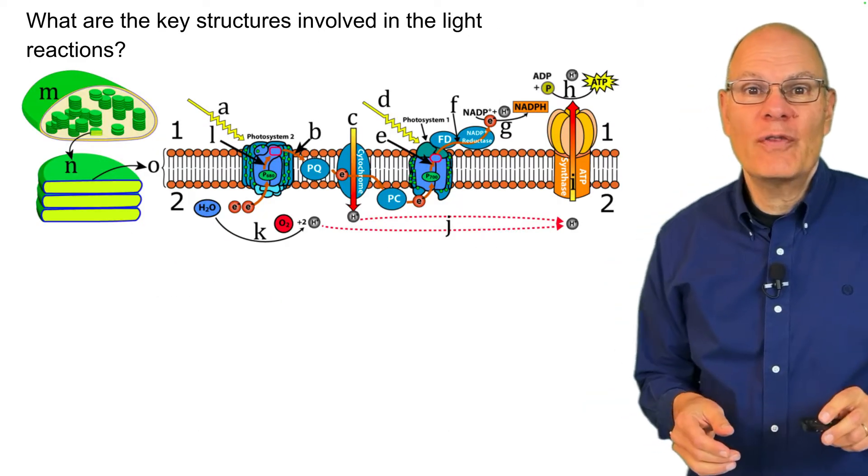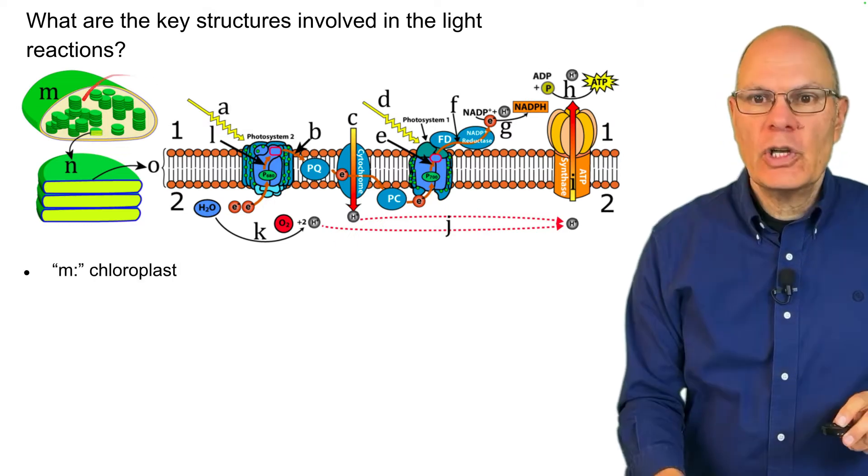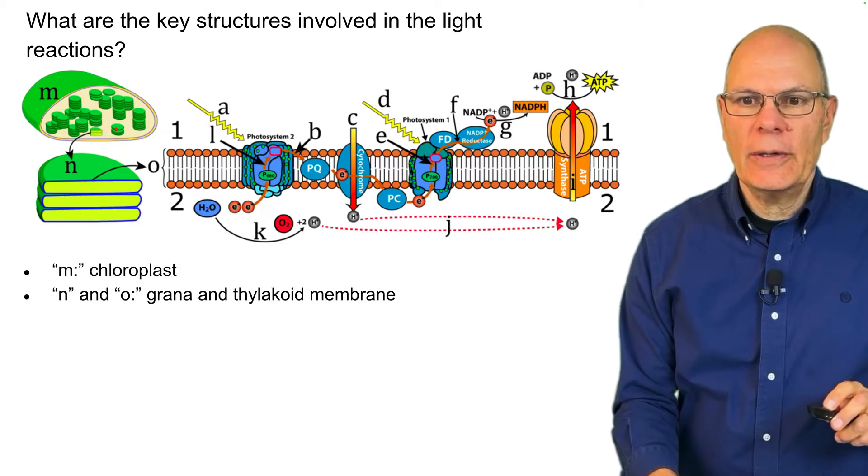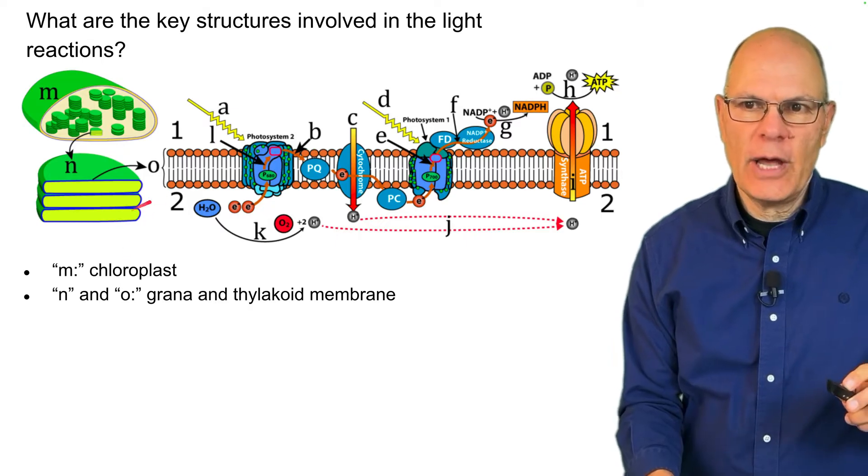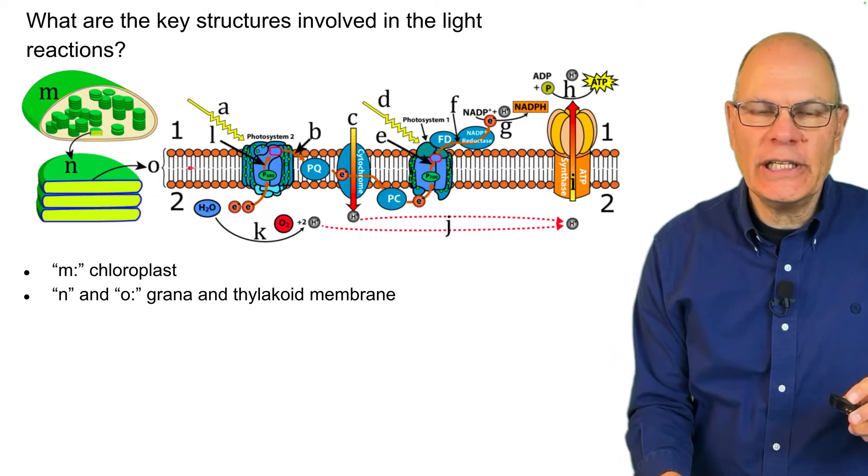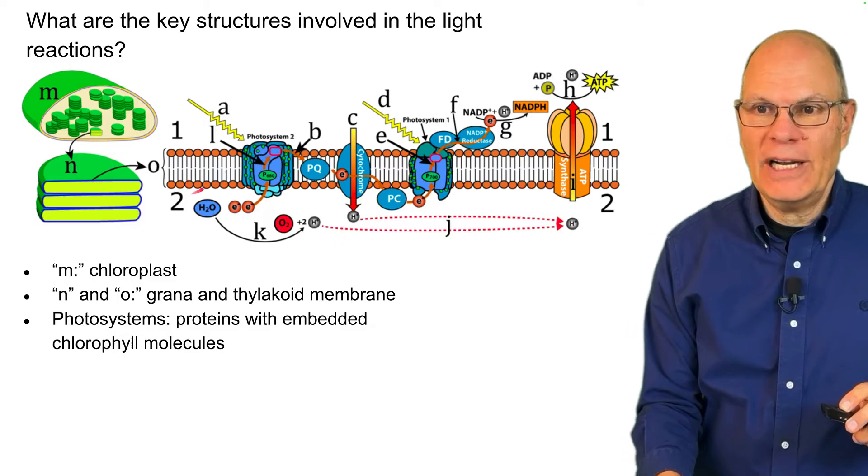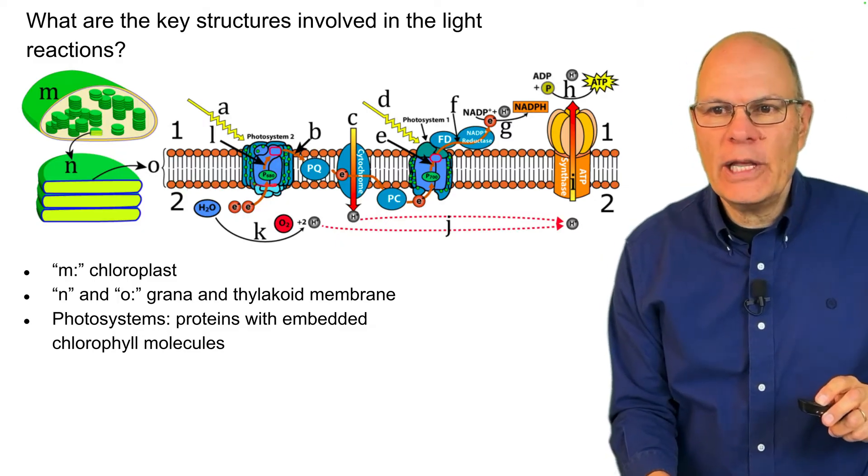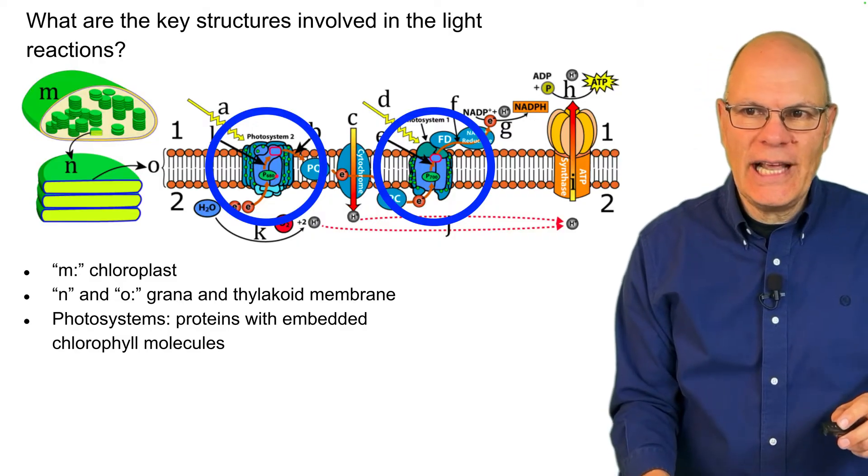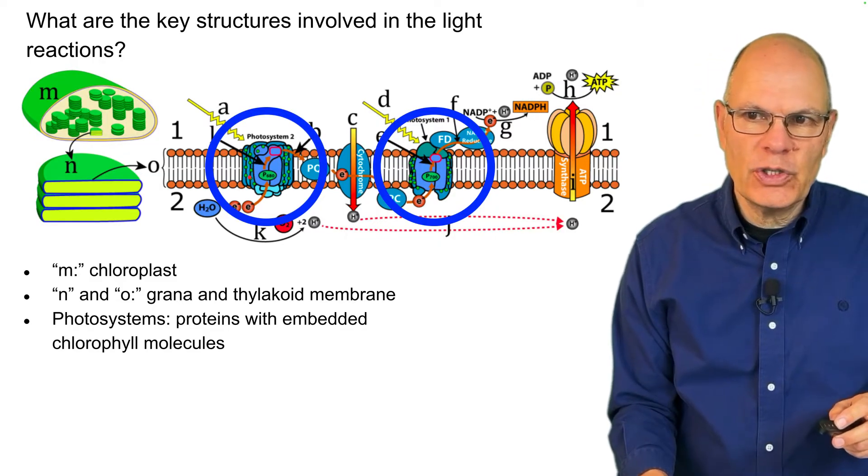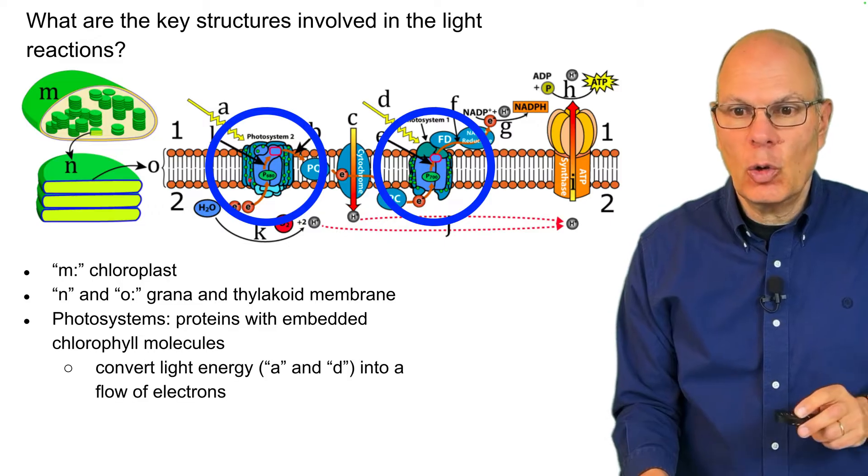What are the key structures involved in the light reactions? We have a chloroplast over here and then at N we have grana and a single thylakoid membrane. Within the thylakoid membrane there are photosystems. Those are complex assemblies of proteins and they have embedded chlorophyll molecules. Those little green dots are chlorophylls.